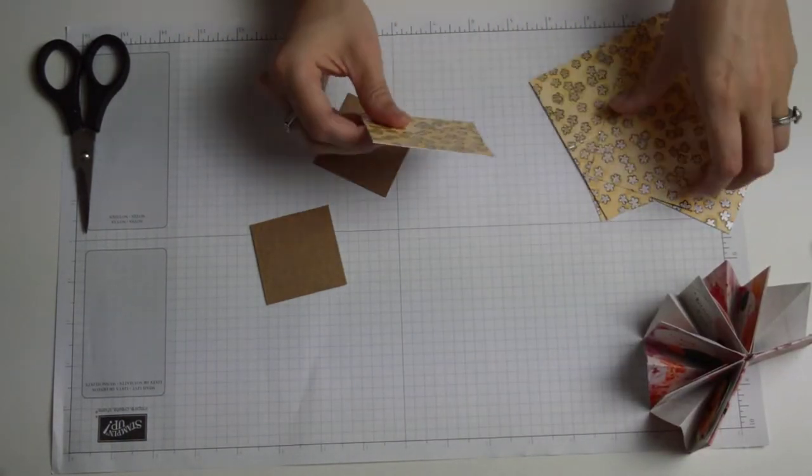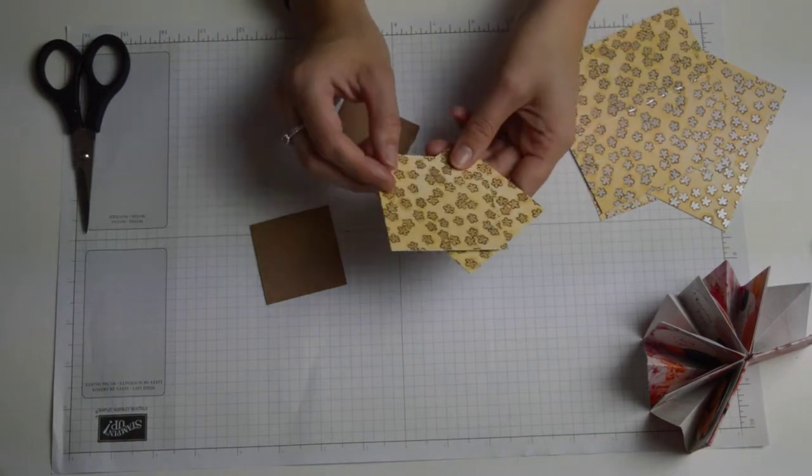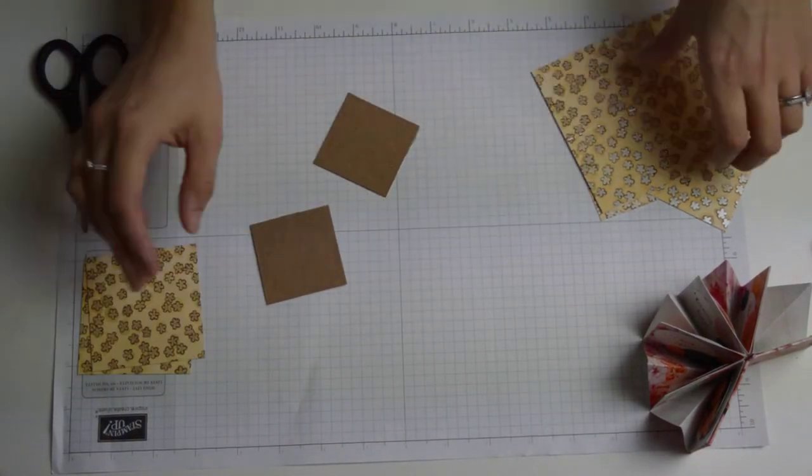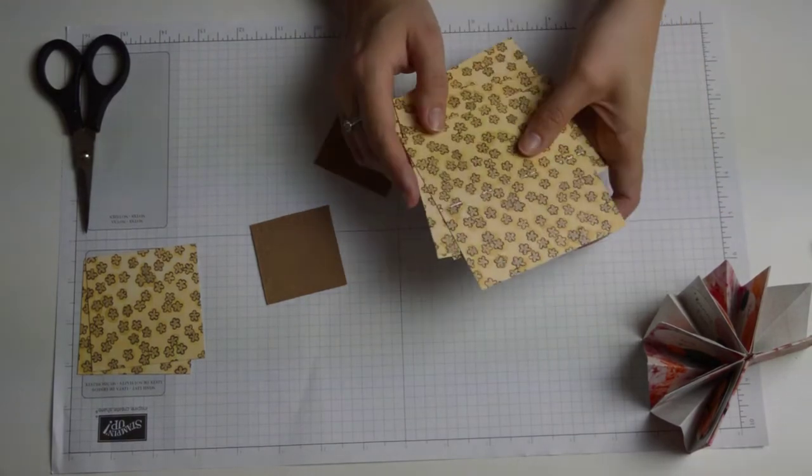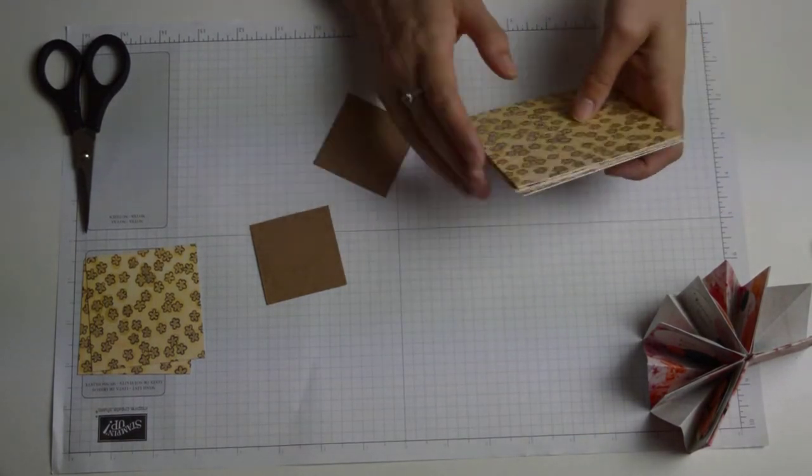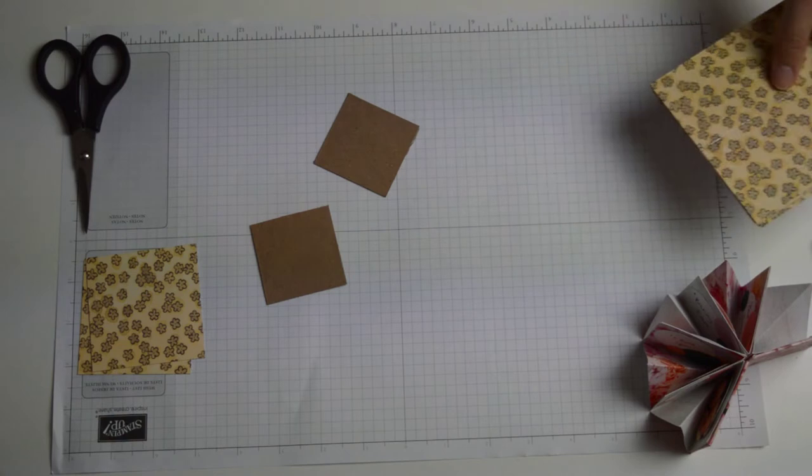You're also going to need two pieces of patterned paper two and three quarters by two and three quarters and you're going to need four pieces of four by four, sorry five pieces of four by four but I'll show you that bit next.